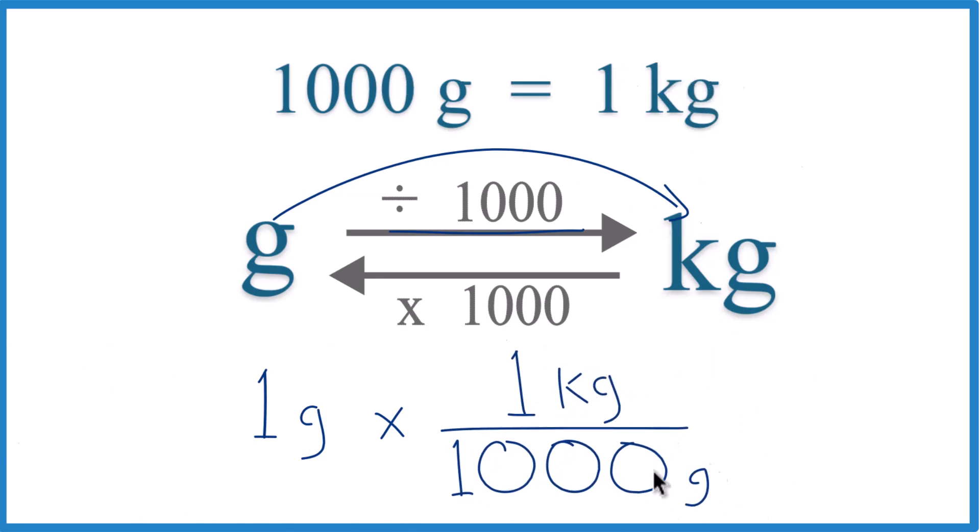so 1 kilogram per 1,000 grams. And now when we multiply the top, we have grams on the top here, and then on the bottom, they cancel out.